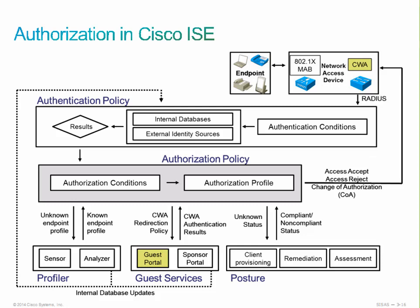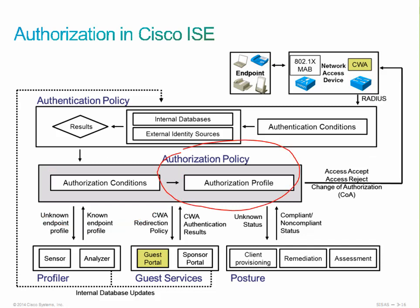Authorization policies have conditional requirements, and when we combine several identity groups using compound conditions — making various authorization checks — we can return a specific profile. We've already authenticated the user, and now we're checking all authorization conditions, which then results in applying an authorization profile. That could be an access accept, an access reject, or a change of authorization.